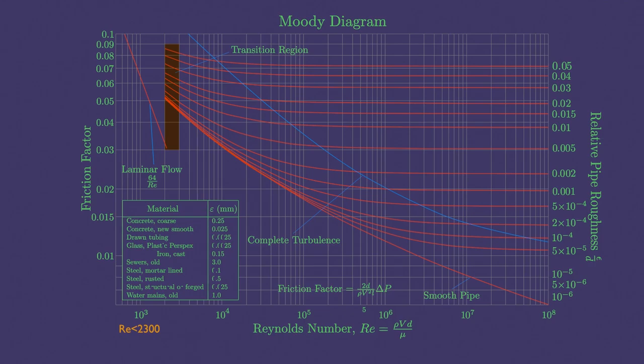Also, the friction factor is a minimum for a smooth pipe, but still not zero because of the no-slip condition, and increases with roughness.